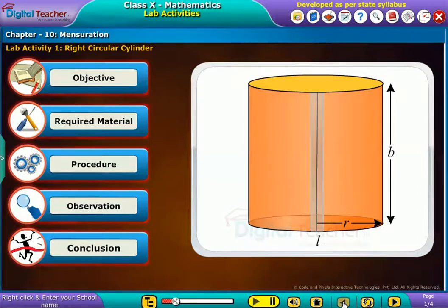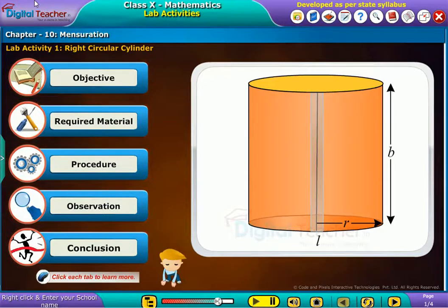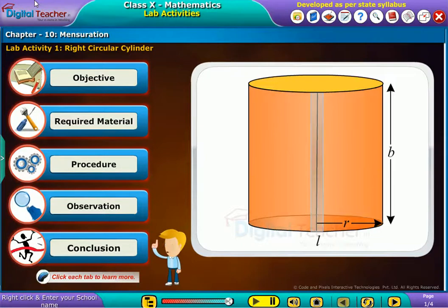Let us do a lab activity to make a right circular cylinder of given height and circumference of the base from a rectangle. Click each tab to learn more.